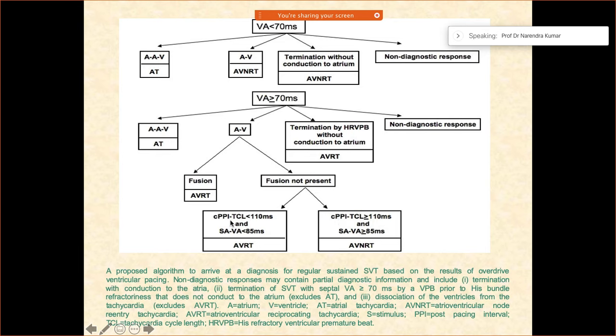The PPI minus tachycardia cycle length: if it is less than 110, AVRT. If it is more than 110, AVNRT. This can be a little bit confusing. What I used to recall was, more than 110 will be AVNRT, less than 110, AVRT.